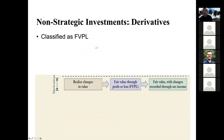So the next one would be derivatives. We just talked about equity and the next one is derivatives. For derivatives, classify as FVPL. Classify derivatives as FVPL.